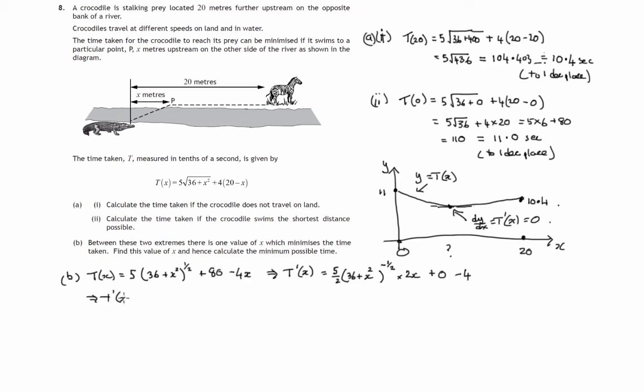Let's tidy that up. T dashed of x, the gradient formula. Negative a half power means we can make up a fraction and put that down at the bottom with a positive half power. The 2's already down at the bottom, there's a 2 up at the top, these 2's can cancel. We're just left with 5 times x on the top of this fraction, with this 36 plus x squared to the negative half going down to the bottom and becoming 36 plus x squared to the positive half. Anything to the positive half means the square root. And we're going to have a minus 4.